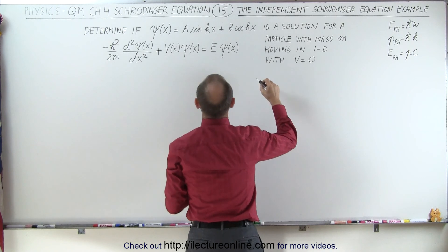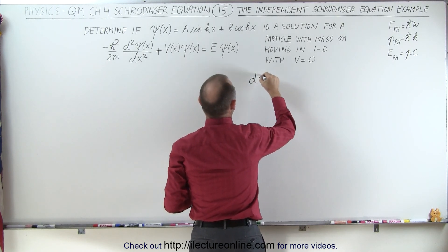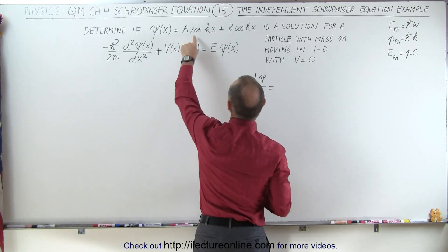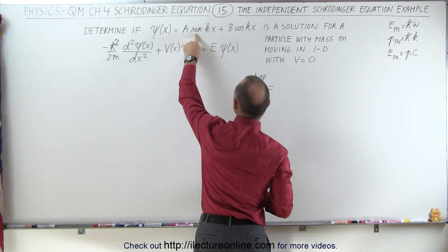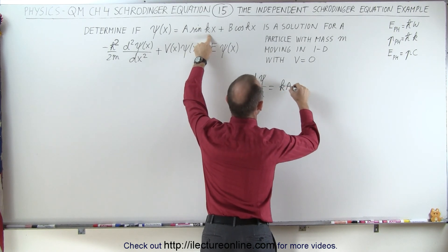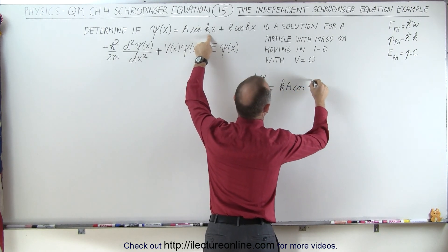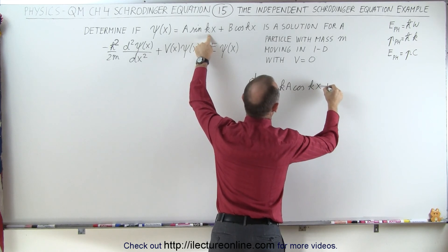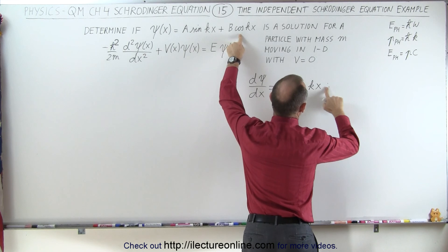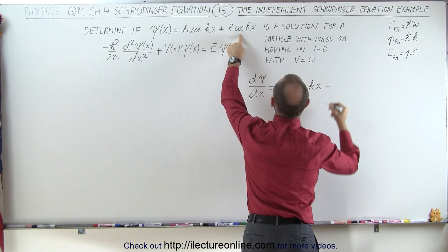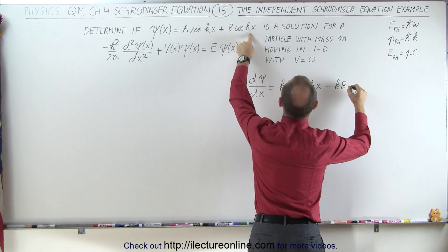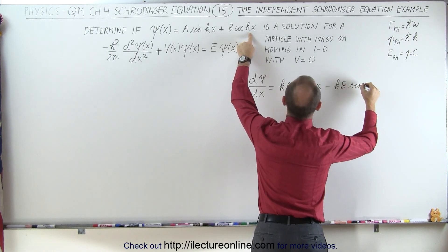The first derivative of the wave function with respect to x: the derivative of sine is cosine, and the derivative of the angle is k. So this becomes ka times the cosine of kx, plus the derivative of the cosine is negative sine, so minus k times b times the sine of kx.